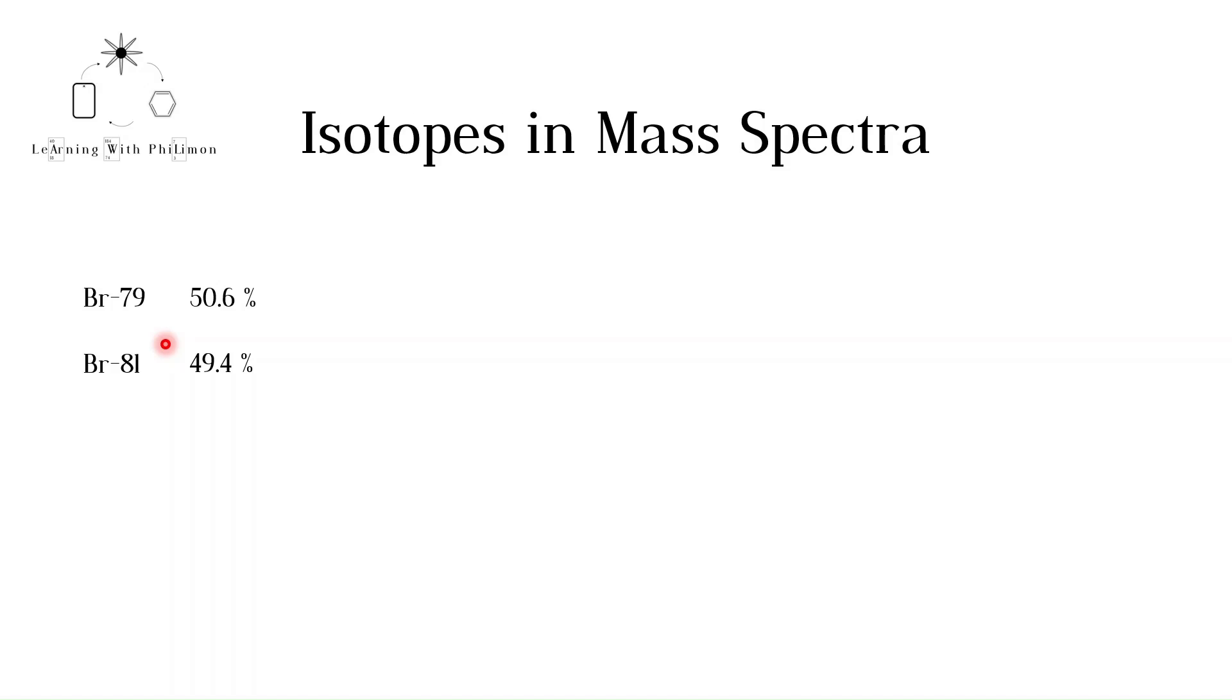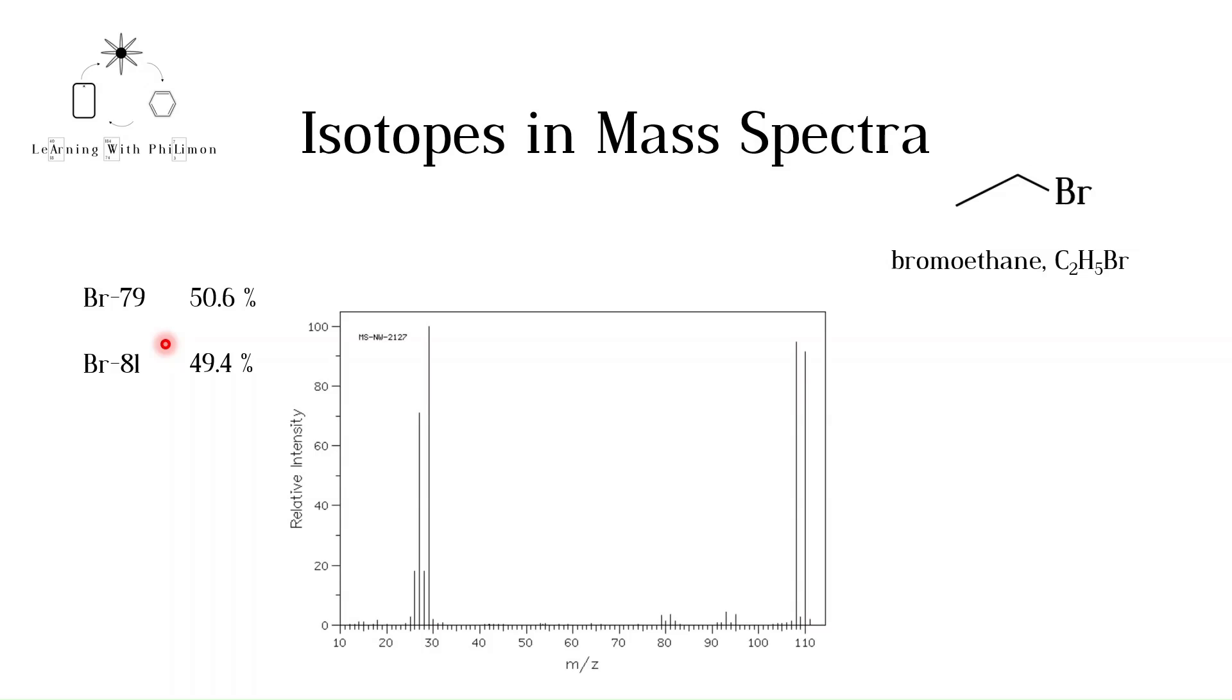Let's take a look at a molecule that contains a bromine atom. Bromoethane has the molecular formula C2H5Br. There is approximately a 50% chance that a molecule contains the Br79 isotope. In this case, the relative molecular mass is 108. If the molecule contains the Br81 isotope, its relative molecular mass is 110.